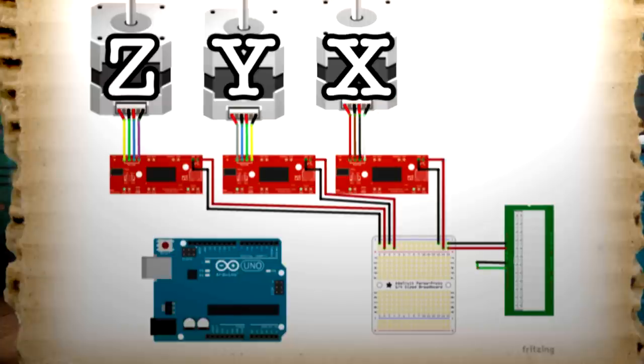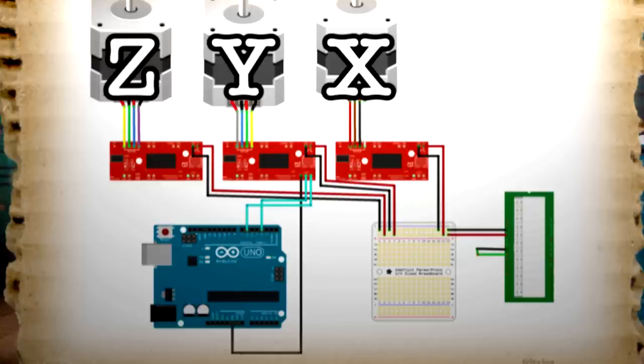So for the Y axis, they go to ground, pin 3 on the Arduino, and pin 6. Then for the X axis, they go to ground, pin 2 on the Arduino, and pin 5.